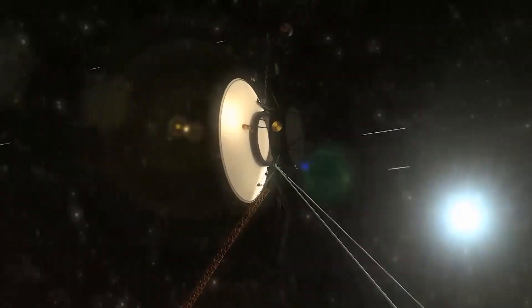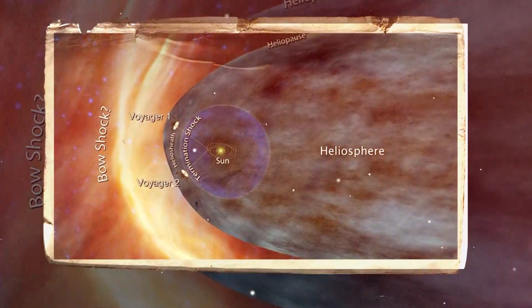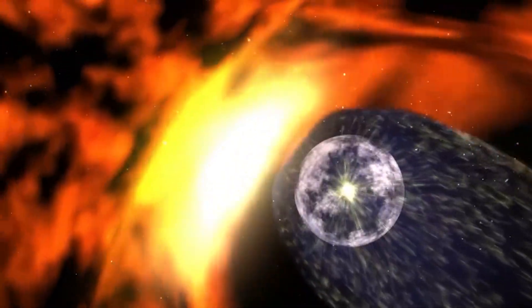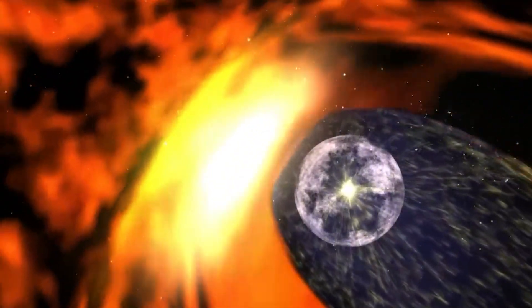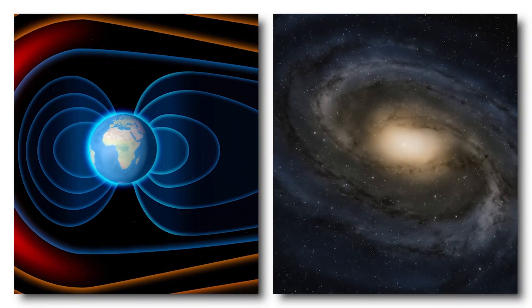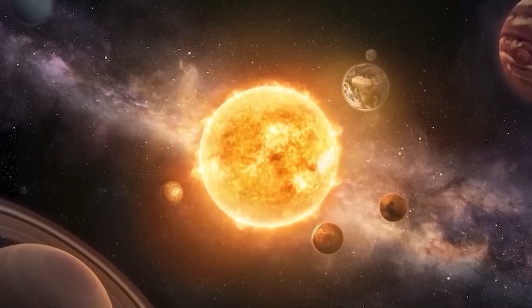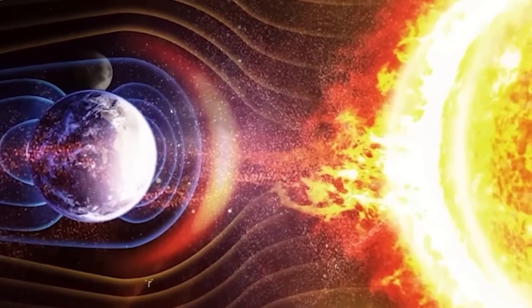This rise didn't occur in a gradual slope, as some had predicted, but instead in discrete jumps and pulses. It suggested that the edge of the heliosphere might not be a smooth, spherical shell, but rather a porous, shifting boundary with fingers and folds, possibly shaped by magnetic fields or pressure differences from the galaxy beyond. This was a revelation that challenged long-held assumptions about the nature of the sun's outermost influence.